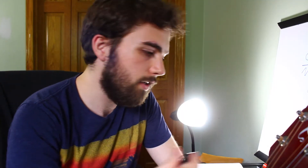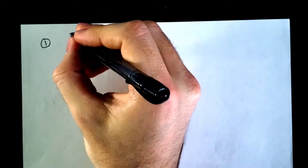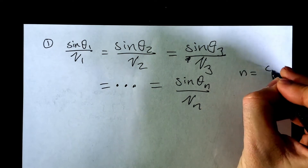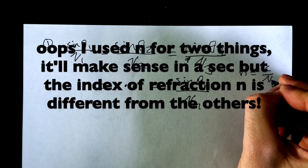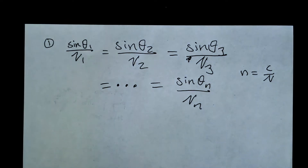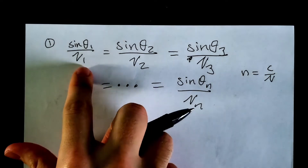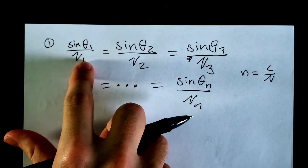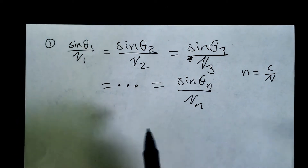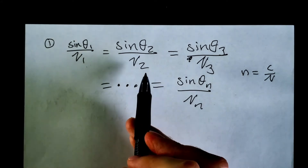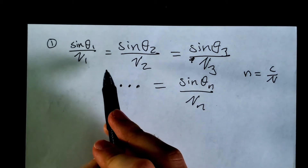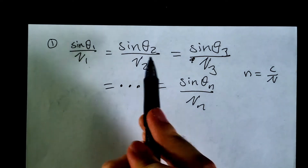Let's take a look at Snell's law. The index of refraction n is just c over v — speed of light in vacuum divided by the speed of light in the medium. You can cancel out the c's. Snell's law tells you that the proportion sine θ over v is the same in every single medium. So if you have light going through a bunch of different mediums, all those proportions are equal.